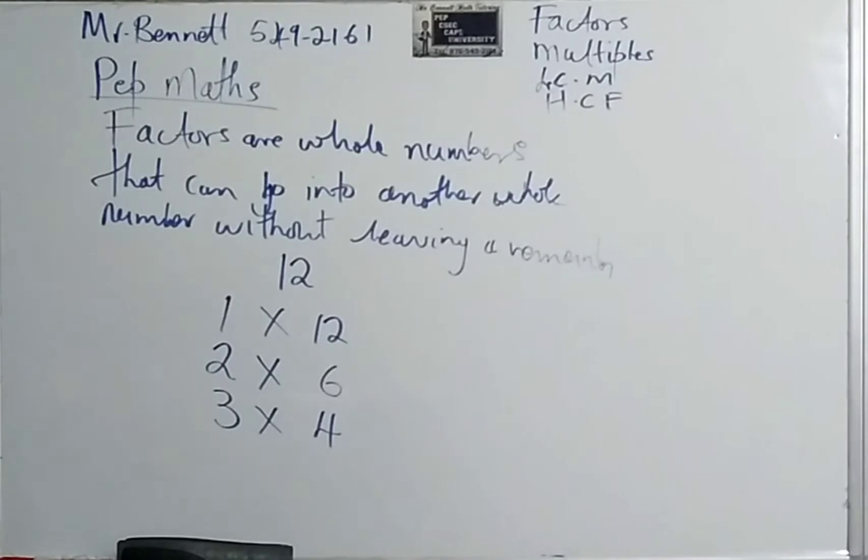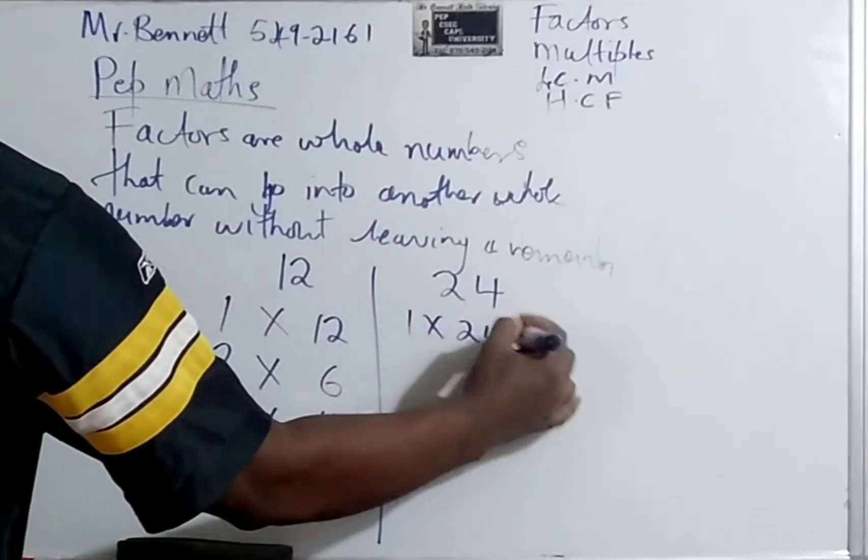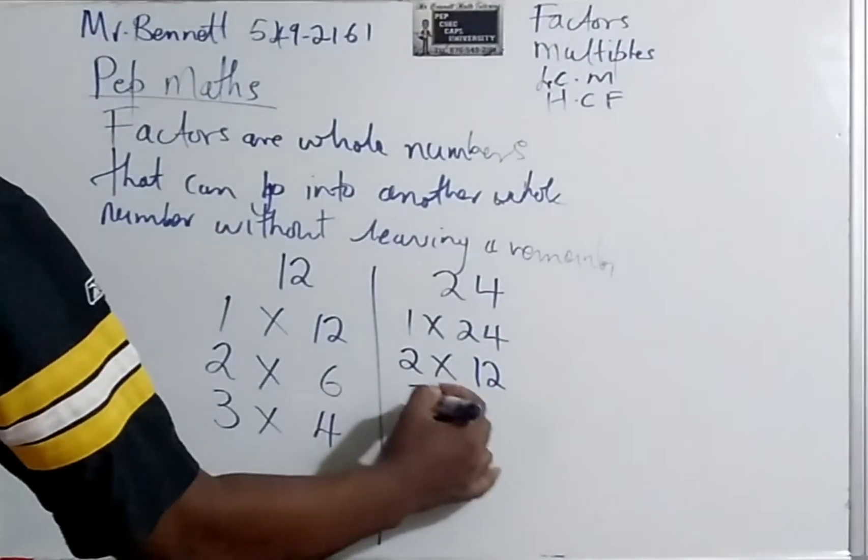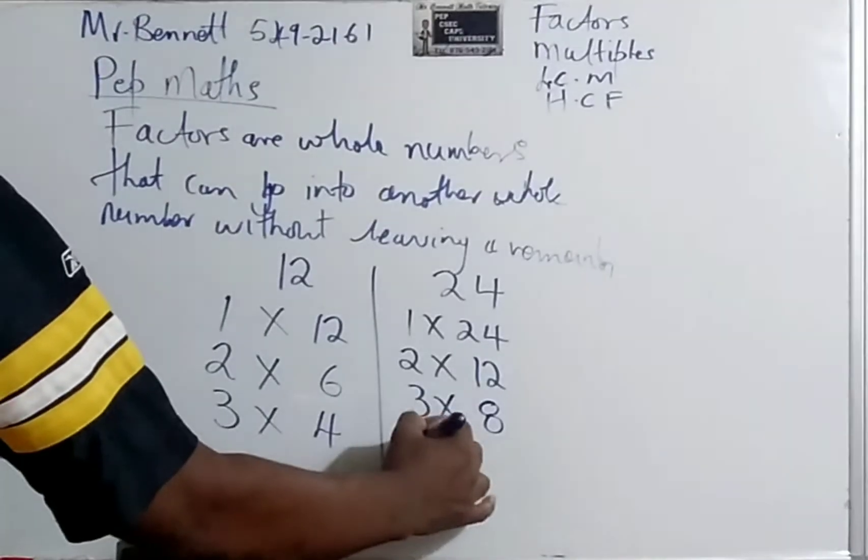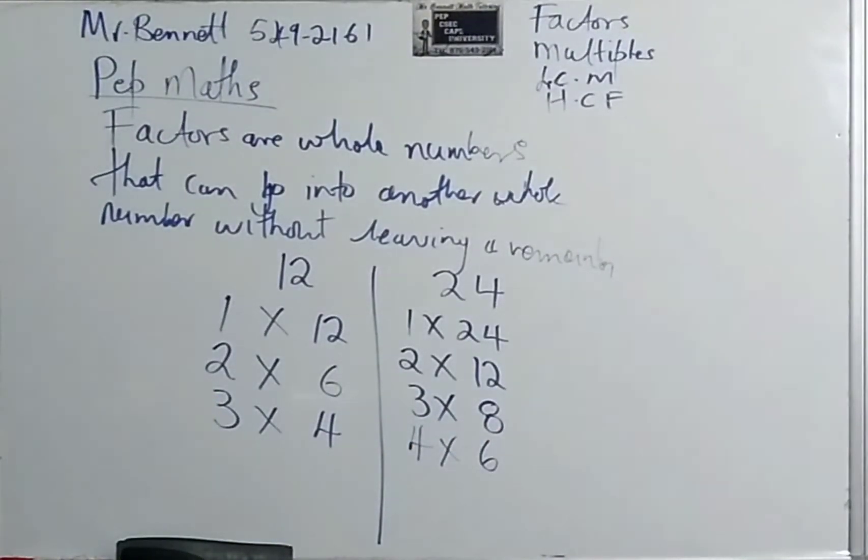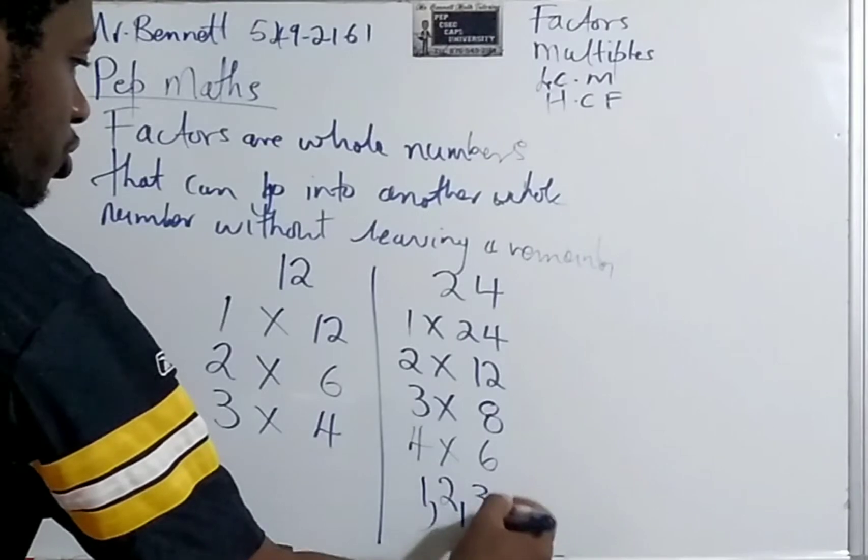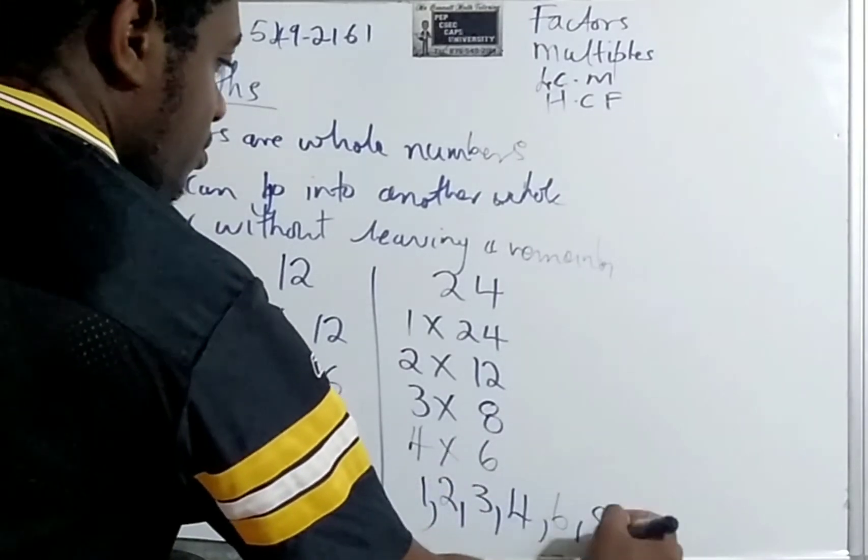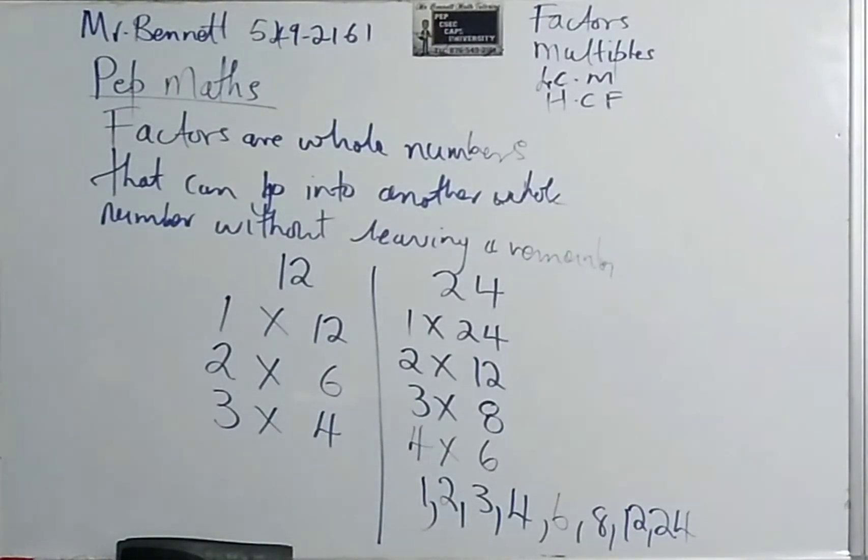Let us look at 24. What are the factors of 24? 1 can go into 24. 1 is a factor of all numbers. 2 can go into it because it is an even number. So it will be 2 times 12. 3 can go in there without leaving a remainder. 3 times 8. Let us check 4. 4 times 6. 7? No. 9? No. So therefore, we can list the factors like this in order. So it will be 1, 2, 3, 4, 6, 8, 12, and 24. Of course, all numbers can go into itself without leaving a remainder. And that's one time.